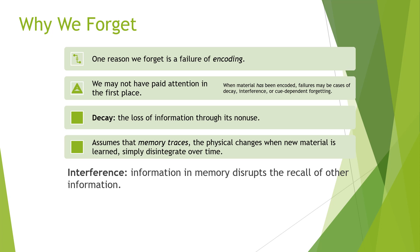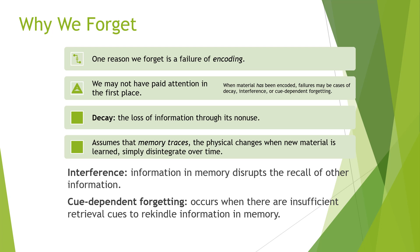Interference is when information in memory disrupts the recall of other information. We'll talk about proactive and retroactive interference shortly. Cue-dependent forgetting occurs when there are insufficient retrieval cues to rekindle the information in memory.